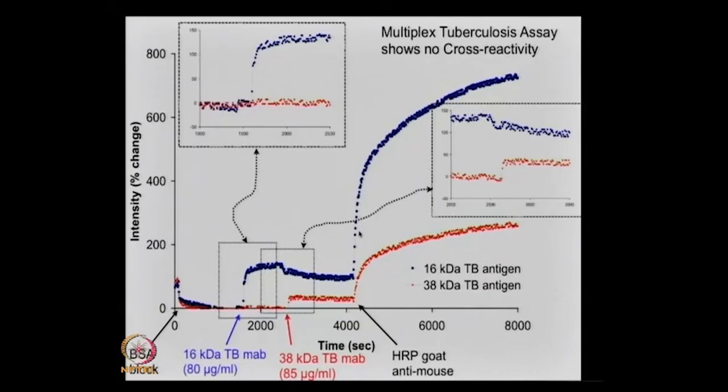If we see the signal of both, we know that the person is positive. TB is very hard to detect, but now you have two signs that it's there. You can imagine adding other potential markers for TB to become more and more sure. It's proof of concept, but it can be applicable depending on the context. And one can make it more robust with the introduction of the right types of proteins and more markers.